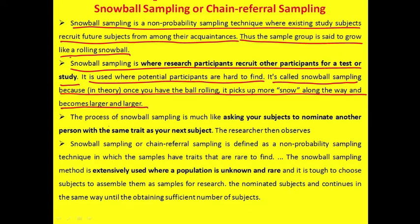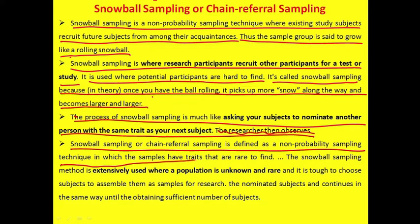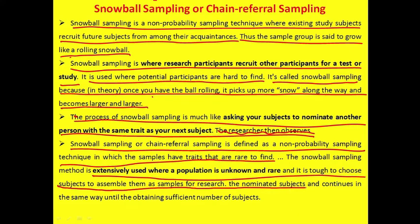The process of snowball sampling is much like asking subjects to nominate other persons with the same trait as the next subject. It is used when rare traits are hard to find — extensively used where a population is unknown, rare, and tough to identify. Nominated subjects continue the same referral process until a sufficient number of subjects is obtained.